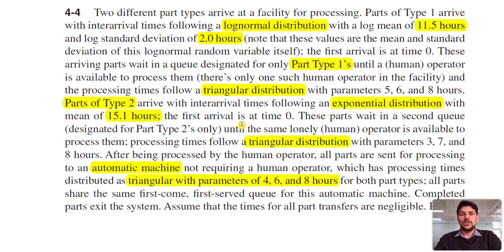Parts of type 2 arrive with an inter-arrival time that follows the exponential distribution with a mean of 15.1 hours. The first arrival is at time zero. These parts also wait in a separate queue designated for type two only. Processing starts when the operator is available and follows a triangular distribution with parameters 3, 7, and 8 hours.